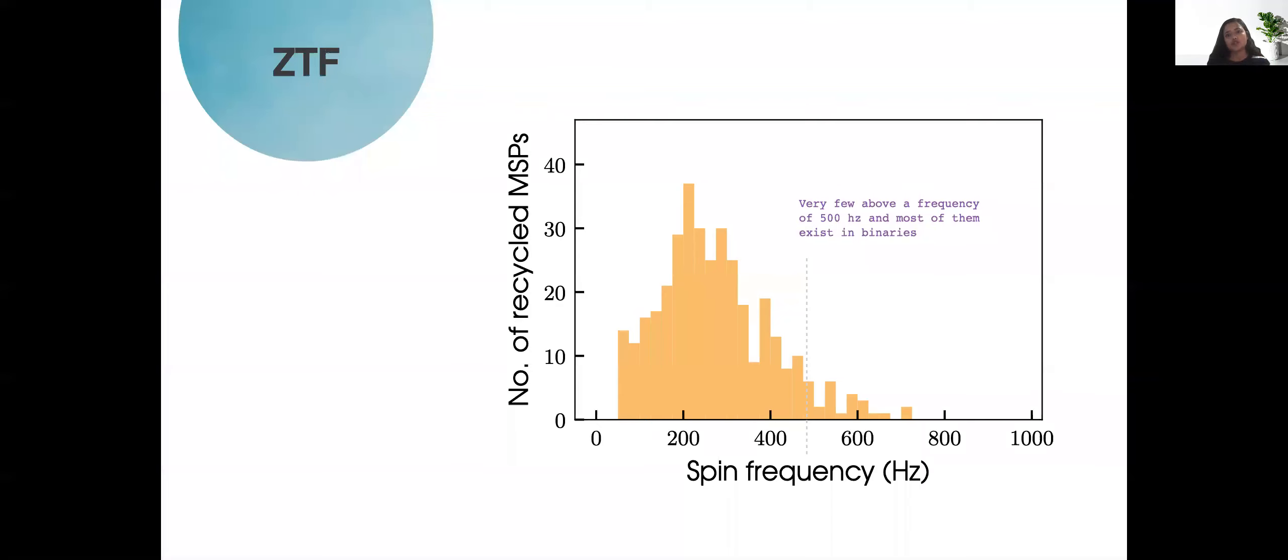In the population of millisecond pulsars if you look at this plot of number of currently recycled millisecond pulsars that we know versus spin frequency you would see that very few of them exist above a frequency of about 500 hertz. Most of the pulsars that are found as millisecond pulsar binaries are in binaries so we would expect them to have the kind of impinging effect of pulsar wind ramming into the companion as we had seen before.